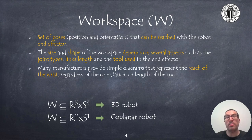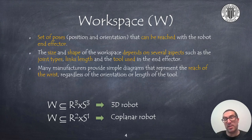Many manufacturers provide simple diagrams that represent the reach of the robot's wrist, but do not consider the orientation or length of the tool. This diagram they provide, in most cases, is an indicative of the areas where the robot can work. The controller, which is in charge of coordinating the robot movements, will take into account if a point is achievable or not, limiting the movements in case we are trying to reach a position outside the robot workspace.